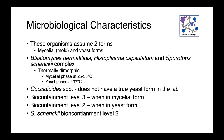Coccidioides species do not have a true yeast form in the lab; this is something we really only see inside the host. Blastomyces, Histoplasma, and Coccidioides are considered biocontainment level 3 when in the mycelial phase because they are highly infectious, and level 2 in the yeast form. The Sporothrix schenckii complex is always considered biocontainment level 2.